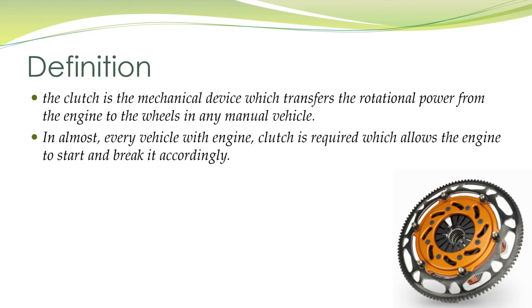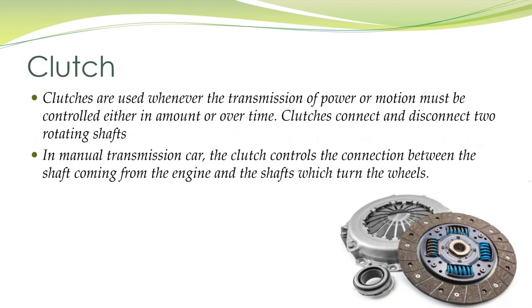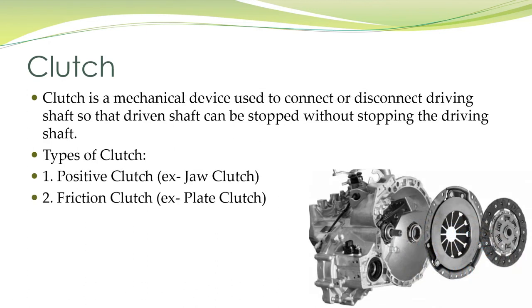In almost every vehicle with an engine, a clutch is required which allows the engine to start and brake accordingly. Clutches are used whenever the transmission of power or motion must be controlled, either in amount or over time. Clutches connect and disconnect two rotating shafts. In a manual transmission car, the clutch controls the connection between the shaft coming from the engine and the shaft which turns the wheels. It is used to connect or disconnect the driving shaft so that the driven shaft can be stopped without stopping the driving shaft.